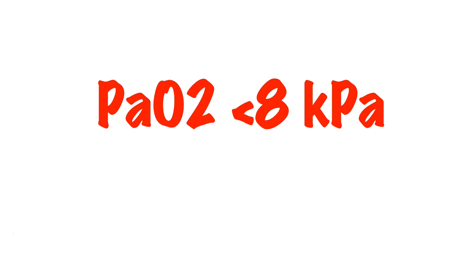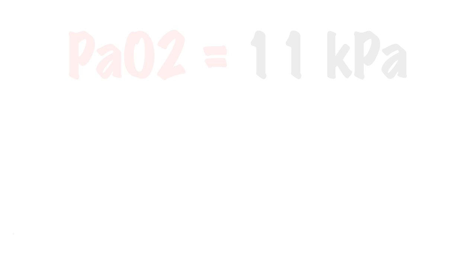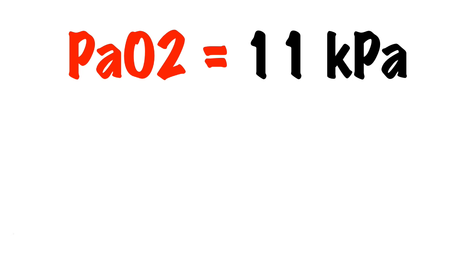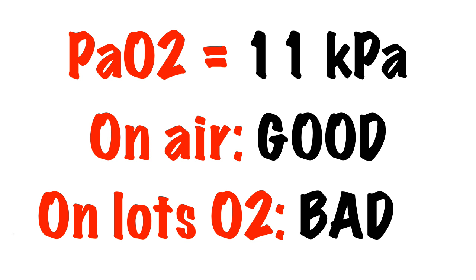If the partial pressure of oxygen drops below 8, then we usually consider the patient to be hypoxic. It's vital to know how much oxygen the patient is on when looking at an arterial blood gas. If a patient has a partial pressure of oxygen of 11 on air, then I'm not concerned. If a patient has a partial pressure of oxygen of 11 on 60% oxygen, then I am concerned.